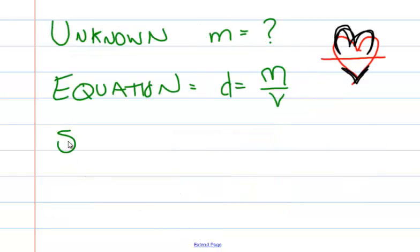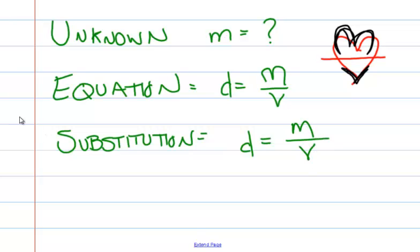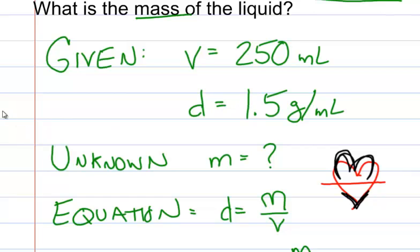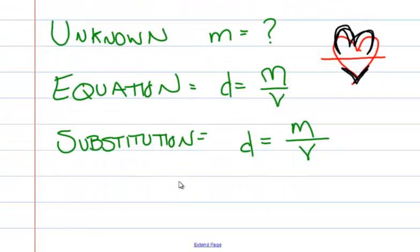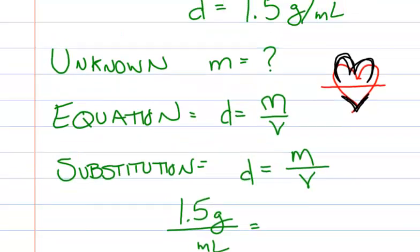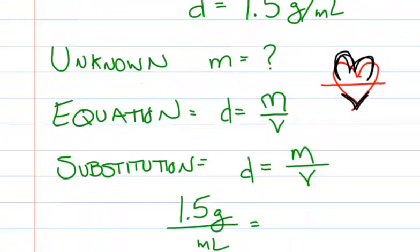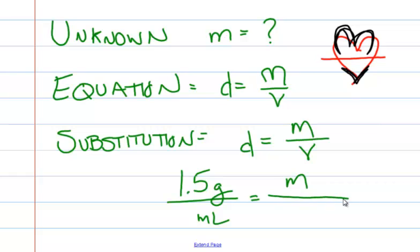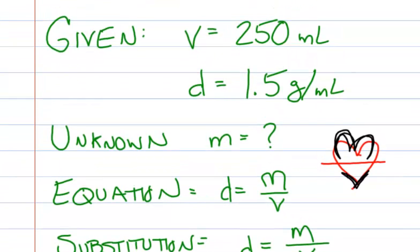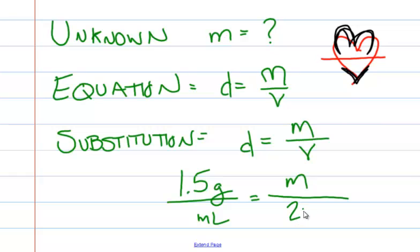Now we're going to do substitution. So density equals mass divided by volume. What was our density? From our given, our density is 1.5, so we know we have 1.5 grams per milliliter equals our mass is unknown, and our volume is 250 milliliters.